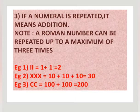Now 3. A numeral is repeated means it is addition. Example 1, II. II means what? 1 plus 1, 2. XXX. That means 10 plus 10 plus 10 is equal to 30. CC, that means 100 plus 100 is equal to 200. And remember, we can repeat a Roman numeral maximum 3 times.